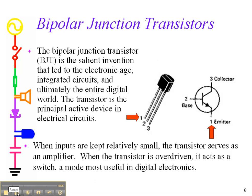The transistor is a switch. As seen in the last video, current flows in this direction — in this case downward due to the orientation — and is controlled by the voltage on the base. If you put a voltage on the base, it opens the switch and current flows. If you don't put a voltage on the base, the switch doesn't open and current does not flow.